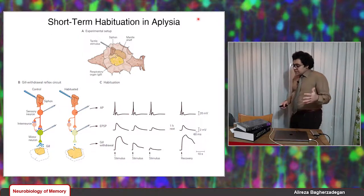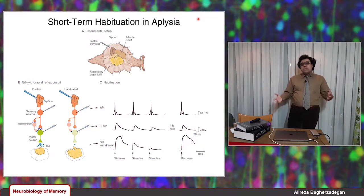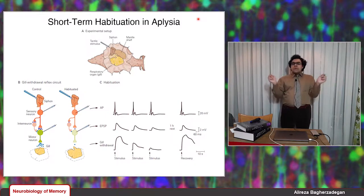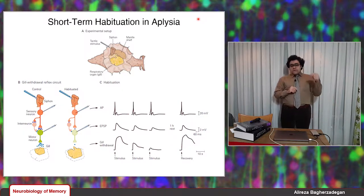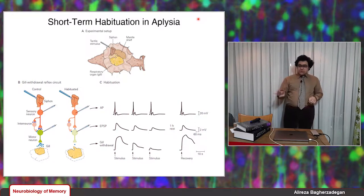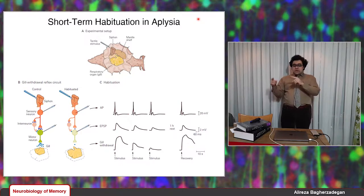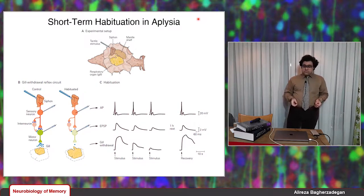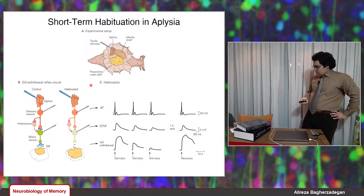To induce short-term habituation, we do one session of stimulation — each session has 10 stimuli — and that causes short-term habituation lasting up to hours. But if we do four sessions of 10 stimuli each — 40 stimuli total — separated by time intervals of hours or days, we get long-term habituation, which can last up to three weeks.